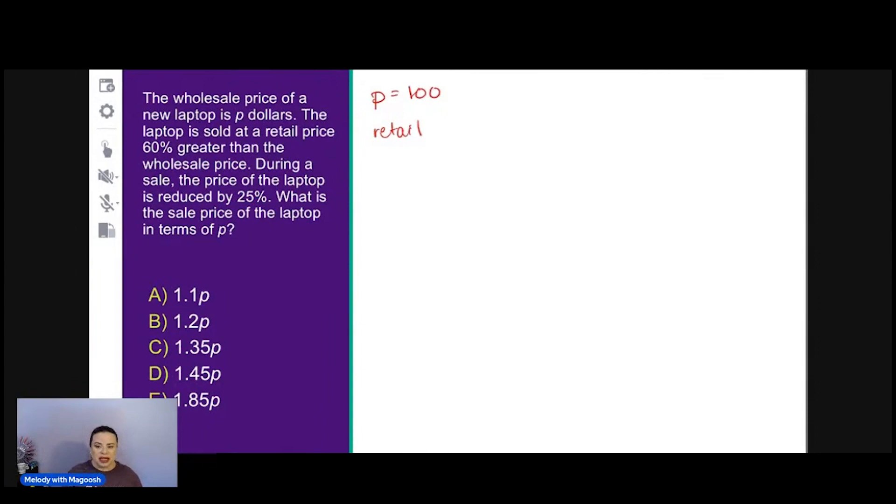The laptop is sold at a retail price that is 60% greater than the wholesale price. Here's the beauty of picking an easy number. What is 60% more than 100? Well, 60% of 100 is 60. If we break 100 into 100 parts and take 60 of them, 60% of 100 is 60. So if it's going to be 60% greater, that means we're going to have the original price 100 plus a $60 increase. $160 is the retail price.